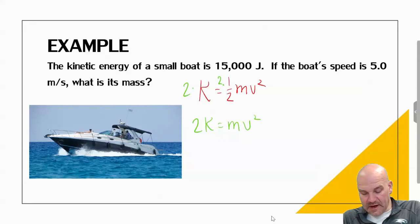The first step is I'm going to multiply everything by 2 to get rid of the one half. And then I'm going to divide everything by v² to get rid of... So we're at 2K = mv². Because typically you're solving for the speed.